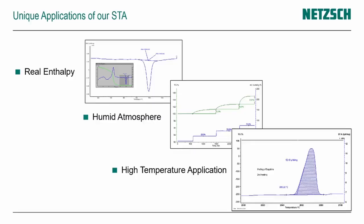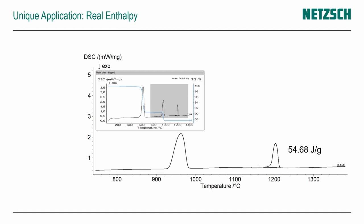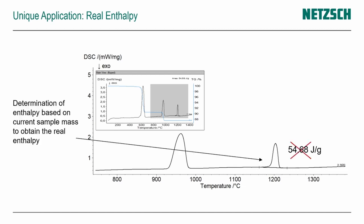The STA has some unique points compared to dedicated systems. The first is real enthalpy. In normal DSC analysis, we look at phase transition effects, for instance a phase transition around 1200°C. These high temperature phase transitions are mostly combined with a mass change that happened before. In a dedicated DSC, measured enthalpy values are always related to the starting mass of the measurement. However, if the sample changes mass during the measurement, this value is incorrect, because at the point of transition the sample mass is no longer the starting mass. The STA measures mass simultaneously to the DSC signal, and therefore knows at every point the real mass of the sample, allowing it to determine the real enthalpy of the phase transition.